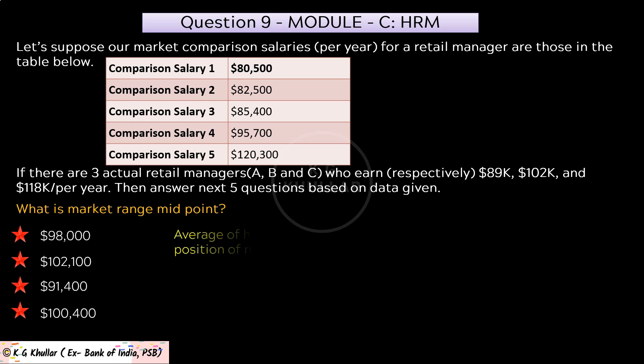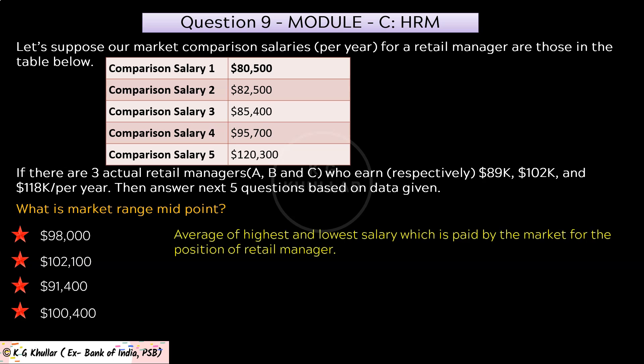The market midpoint is the average of the highest and lowest salary paid by the market for the position of retail manager. The lowest salary given in the market is $80,500 and the highest is $120,300. So when you average these: ($80,500 + $120,300) / 2 = $100,400. The correct answer for the given question is option D.